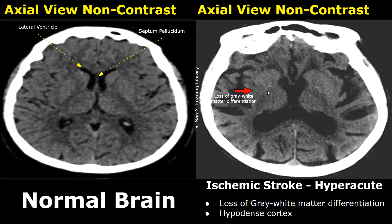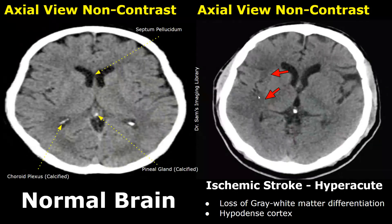At this location you can see a hyperdense area which is not seen at the opposite side of the brain, and it is also not seen in the normal brain image. The cortex is hyperdense at this location. It is harder to differentiate between gray matter and white matter over here. Here we can see a hyperdense cortex, which leads to loss of gray-white matter differentiation.